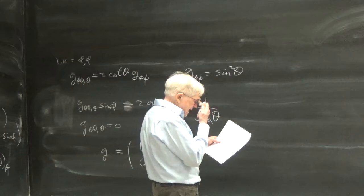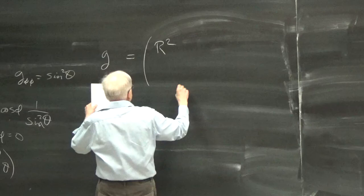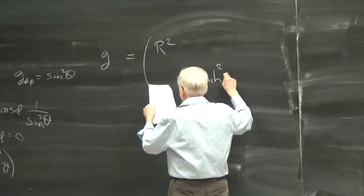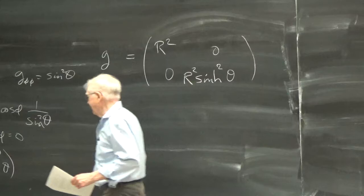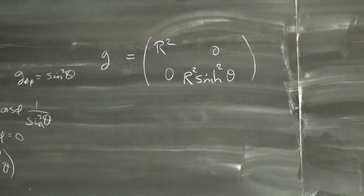Now let's go in the opposite direction. The hyperboloid metric is G equals R² times diag(1, sinh²θ). The question is: could we have pretended we're just going to guess — suppose we have these random Killing vectors, what's the metric corresponding to them? Right — the Killing vectors give you a symmetry, and you ask what can the metric be to have this symmetry.